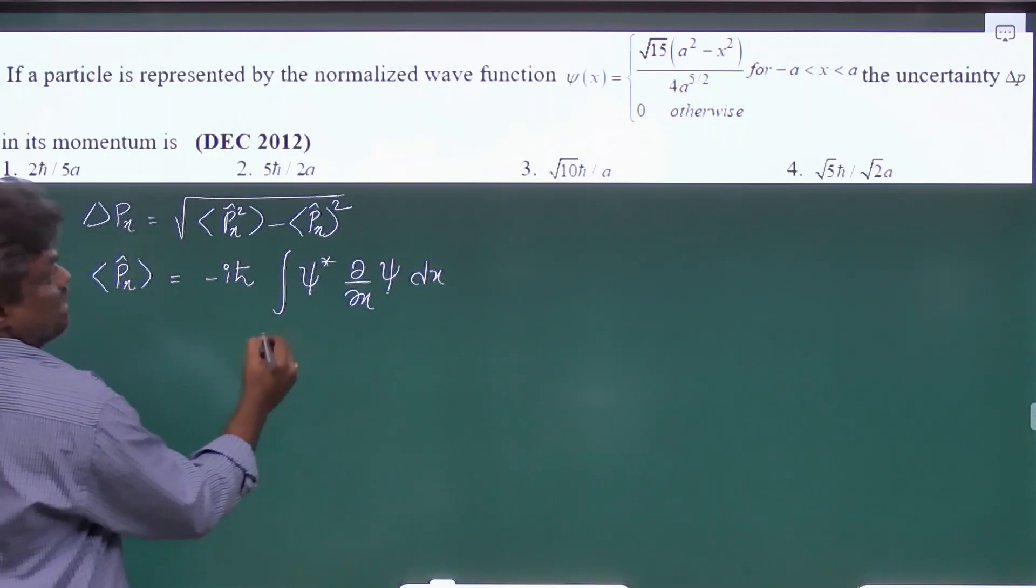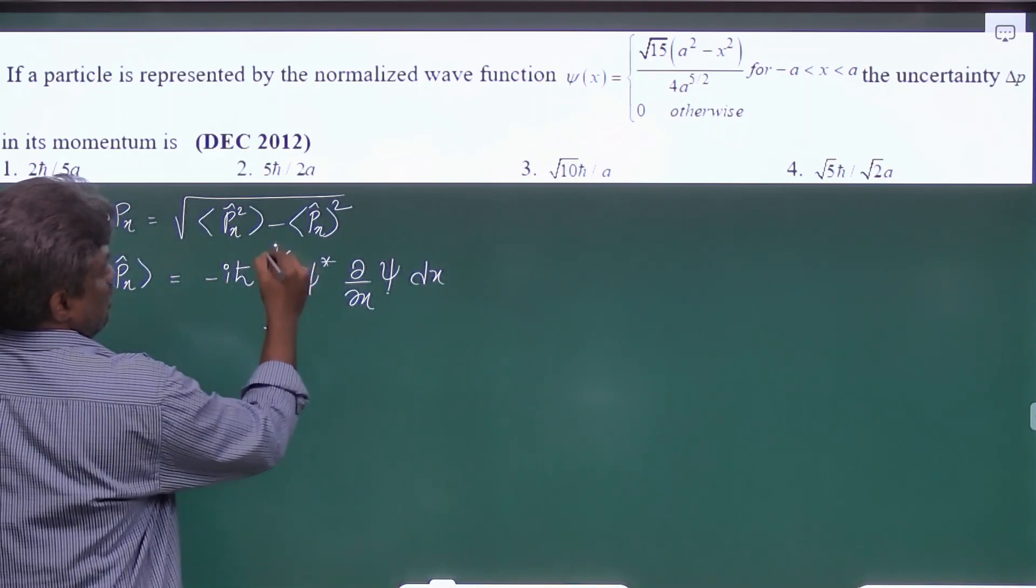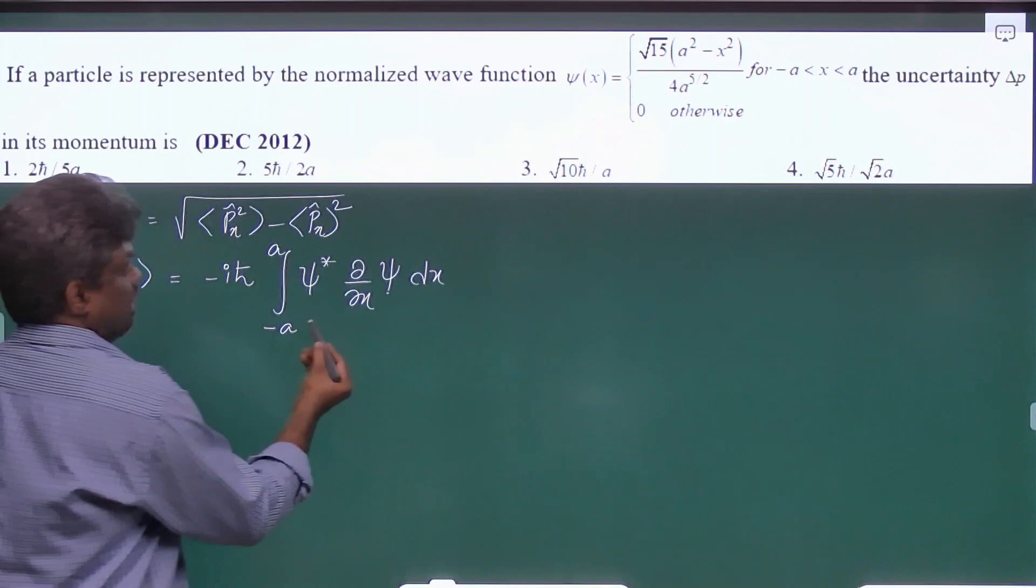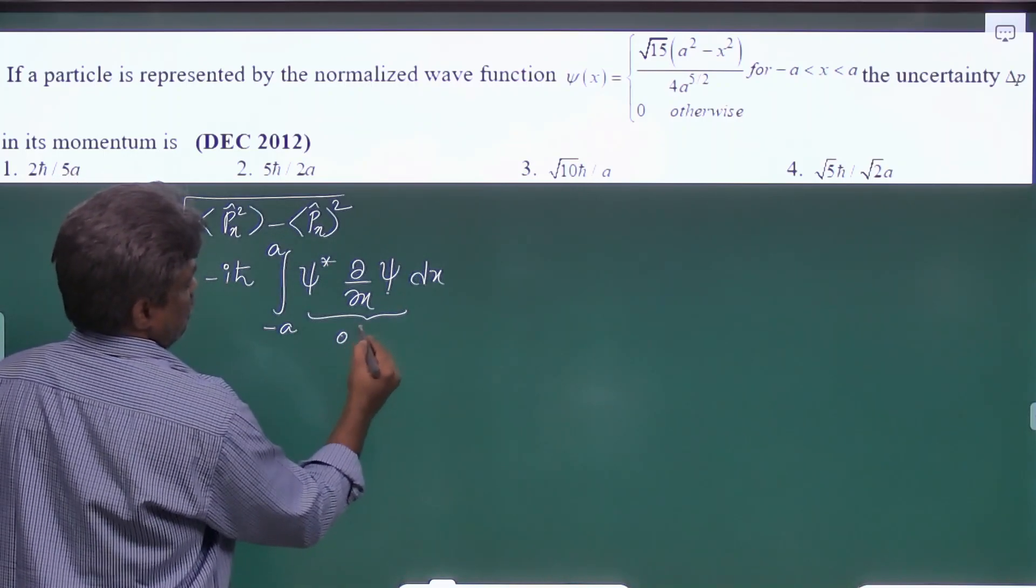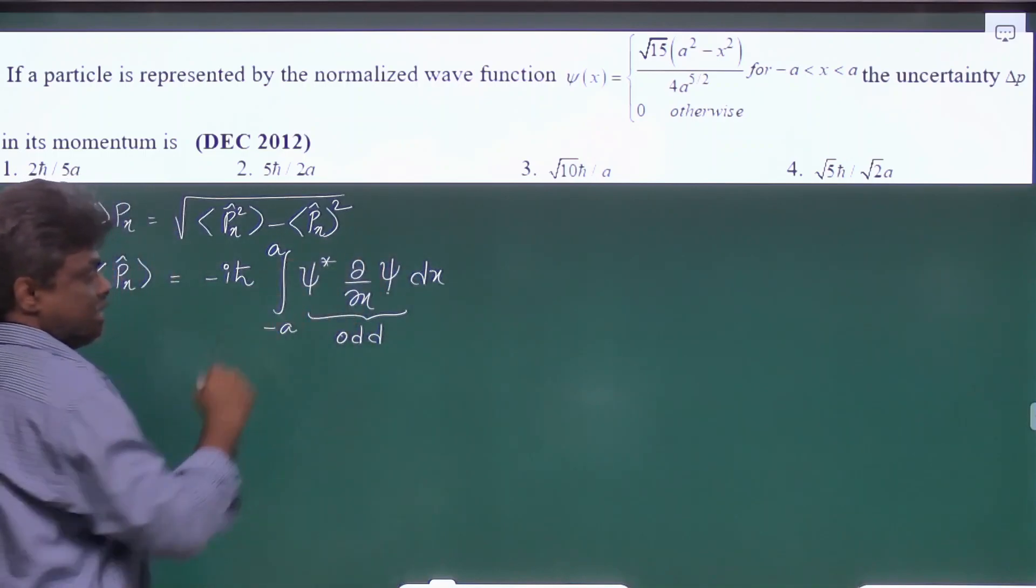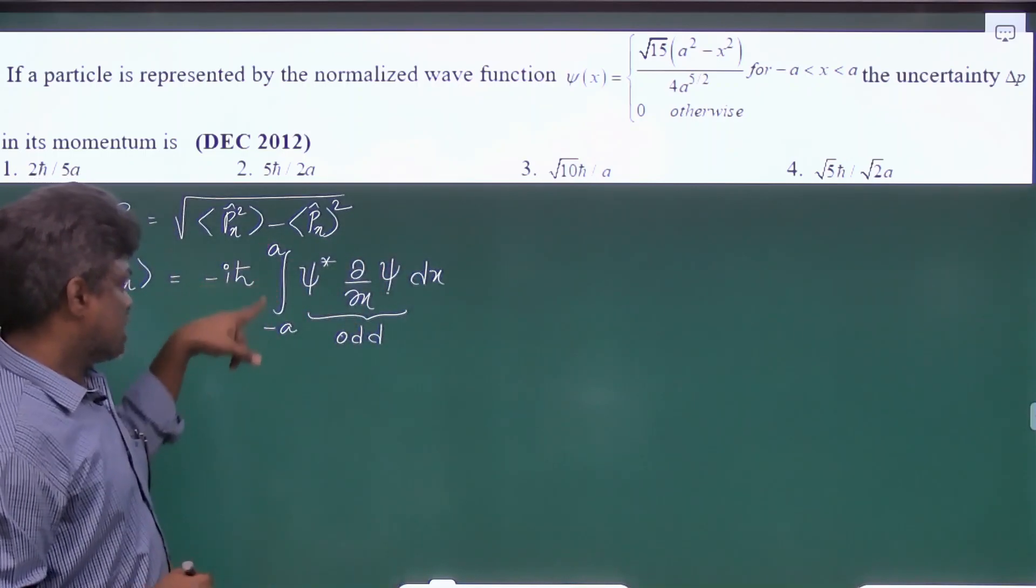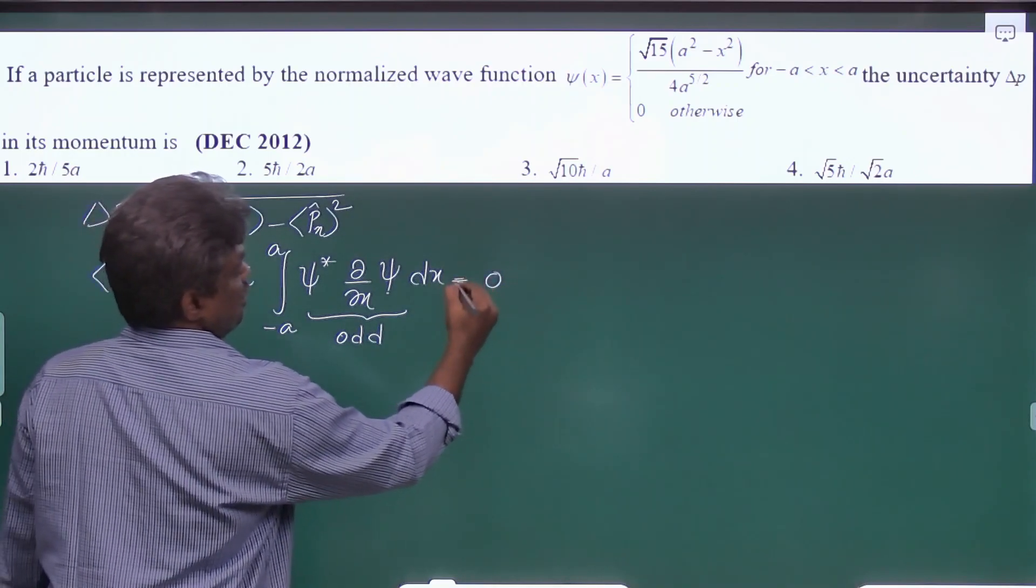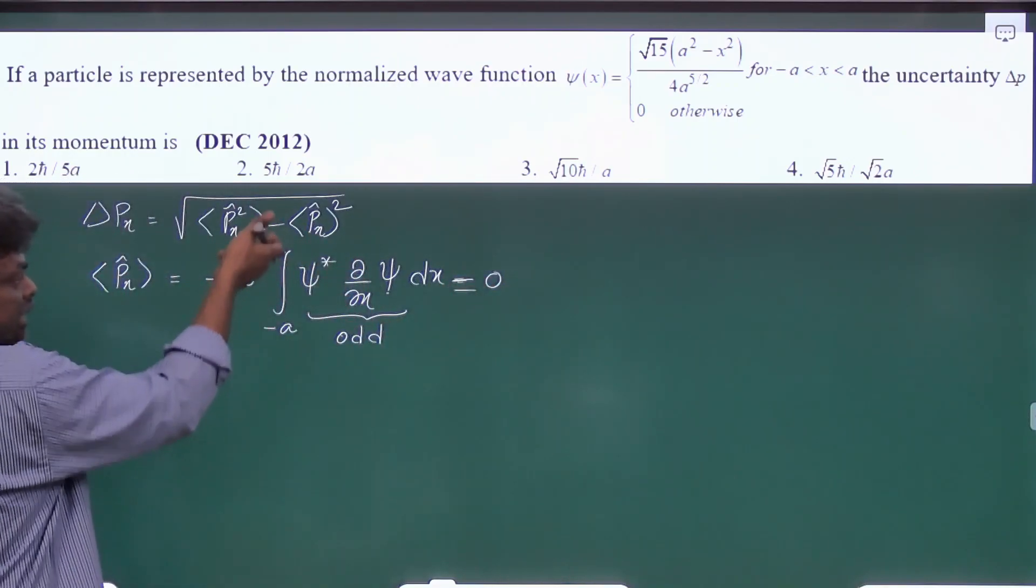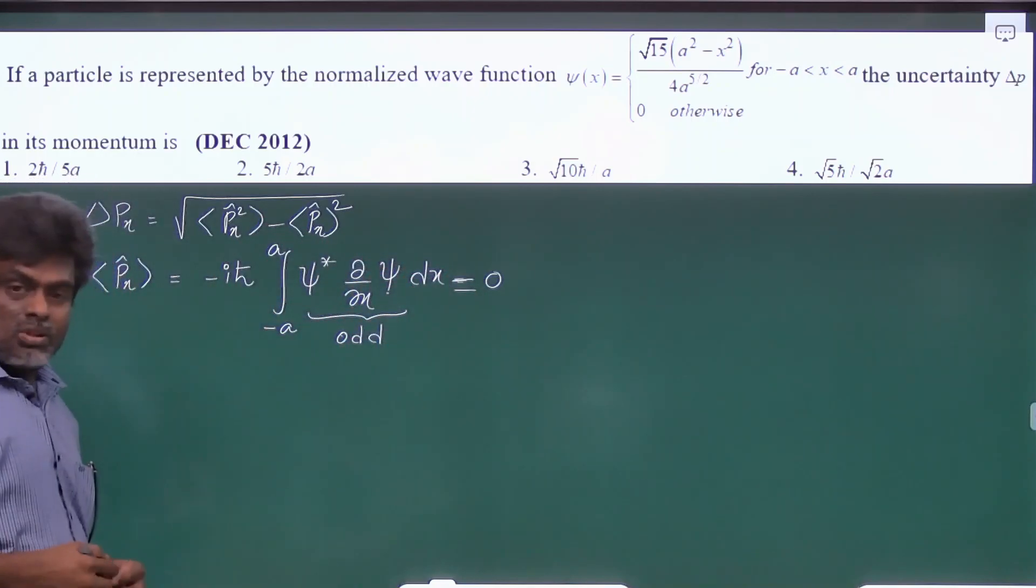So here the limits are from minus a/2 to plus a/2 and here we will get this function as an odd function. That means the integrand is odd and the limits are even so that's why this will be equal to 0. Odd function and even limits, the answer will be 0.